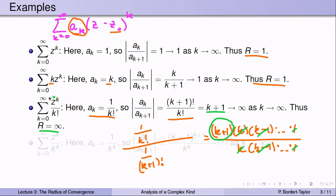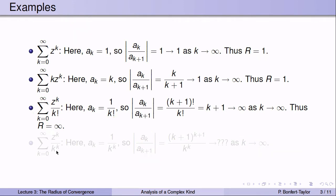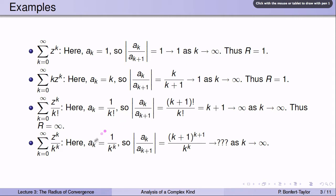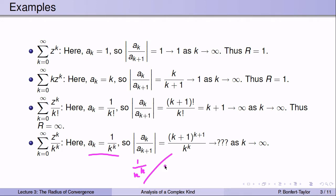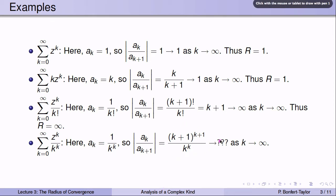Let's look at another example: sum of z^k divided by k^k. So a_k equals 1 over k^k. Looking at a_k over a_{k+1}, that's (1/k^k) divided by (1/(k+1)^{k+1}), which gives (k+1)^{k+1} over k^k. This is a little less clear on how to find the limit — the ratio test is a little harder to apply here because this limit is not as obvious.